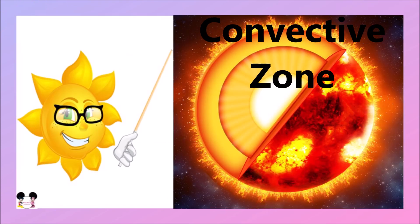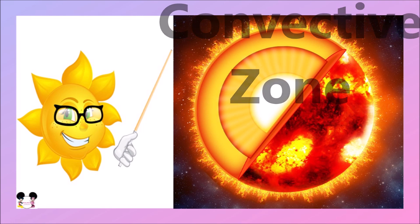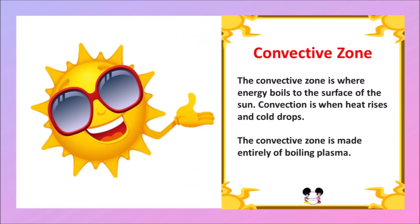The next layer is the convective zone. The convective zone is where energy boils to the surface of the Sun. Convection is when the heat rises and cold drops. The convective zone is made entirely of boiling plasma.